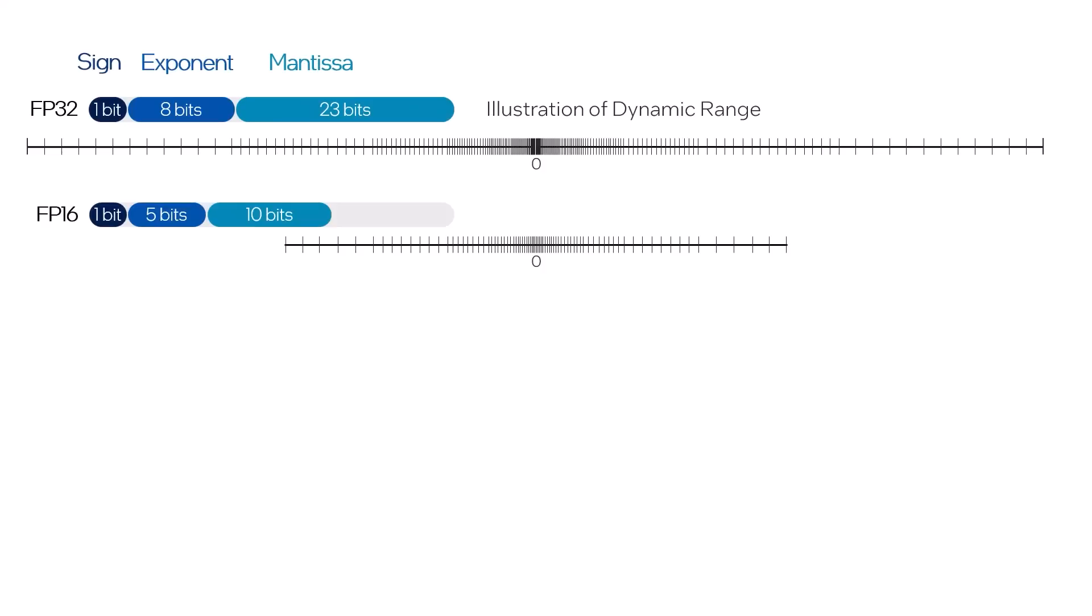Moving to 16-bit floating point reduces both the exponent and the mantissa. So now the representable precision is more coarse-grained and we lose some of the representable dynamic range.